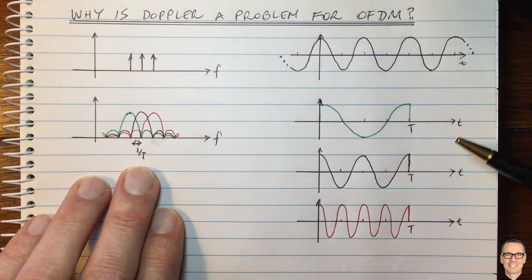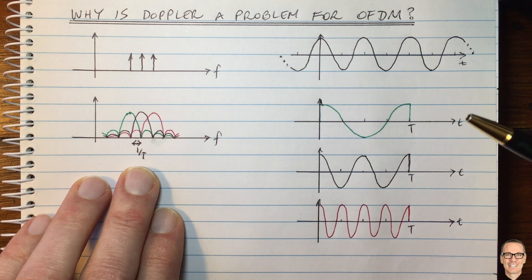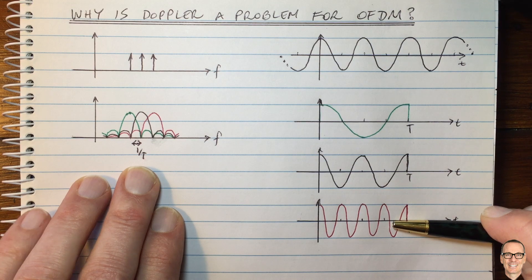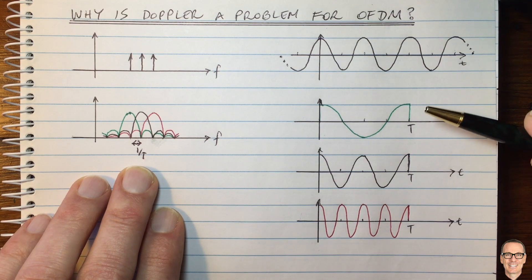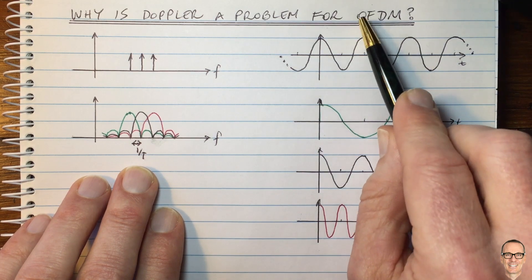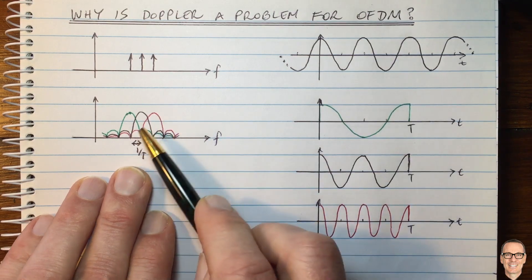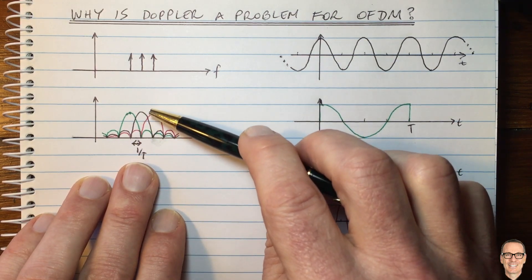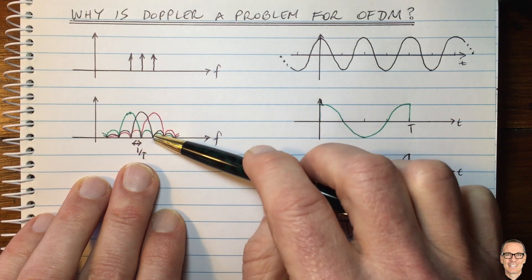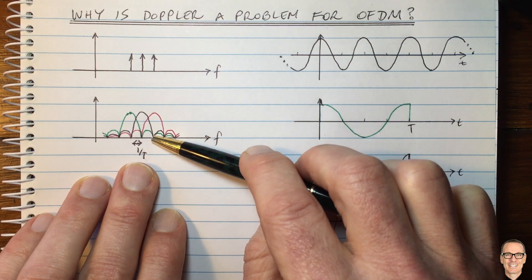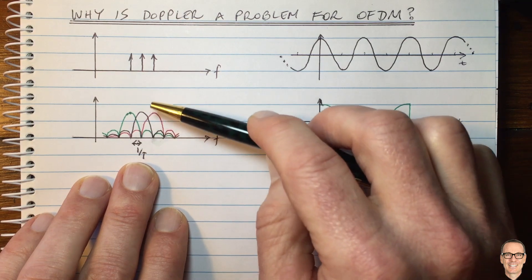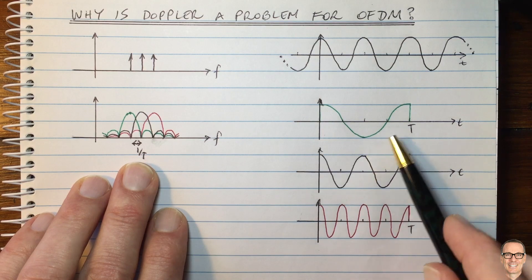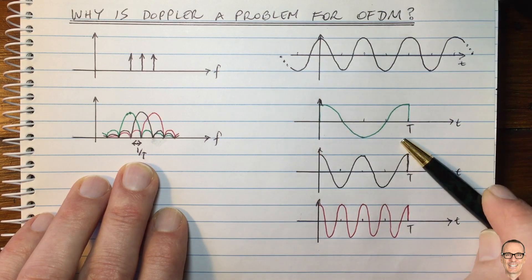And for that, we need to think about what goes on in the receiver. In the receiver, there's effectively a bank of matched filters, one for each of the subcarriers. And it's the output of these matched filters where we see the orthogonality. Some people think the orthogonality is a result of the fact that the peak here lines up with a zero from all of the neighboring subcarriers. But it's actually the other way around. The fact that that lines up is because it's orthogonal. And it's in the time domain that you see the orthogonality.